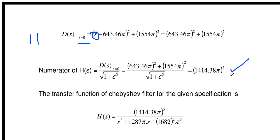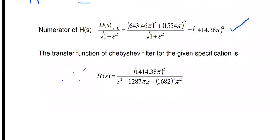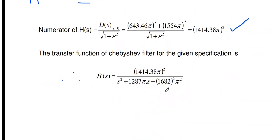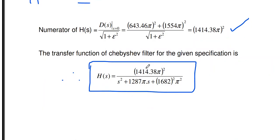Therefore, the transfer function H(s) = (1414.38π)² / [(s + 643.46π)² + (1554.5π)²]. Expanding the denominator using (a + b)² gives the final form with s², s, and constant terms. This is the transfer function of the Chebyshev filter for the given specification.